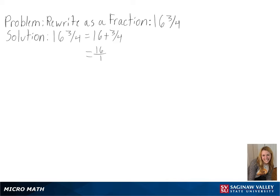To get a common denominator, we can multiply 16 by 4 over 4, since that is equal to 1. Then adding the 3 over 4, we get 64 over 4 plus 3 over 4 to get 67 over 4 as our final answer.